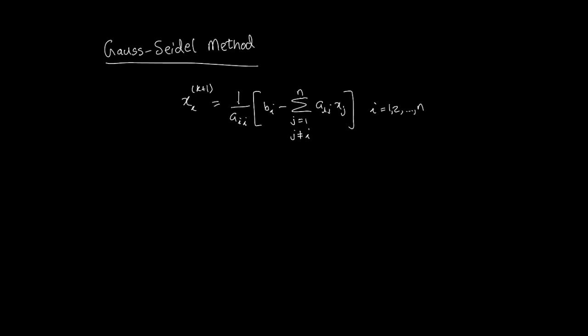So if I look at one equation, for instance, xi k plus 1 equals 1 over, and let's go with the first equation. If I go with x1 for the sake of argument, then this becomes a11 times b1 minus, now let's start looking at this, so we're going to get a11x1.